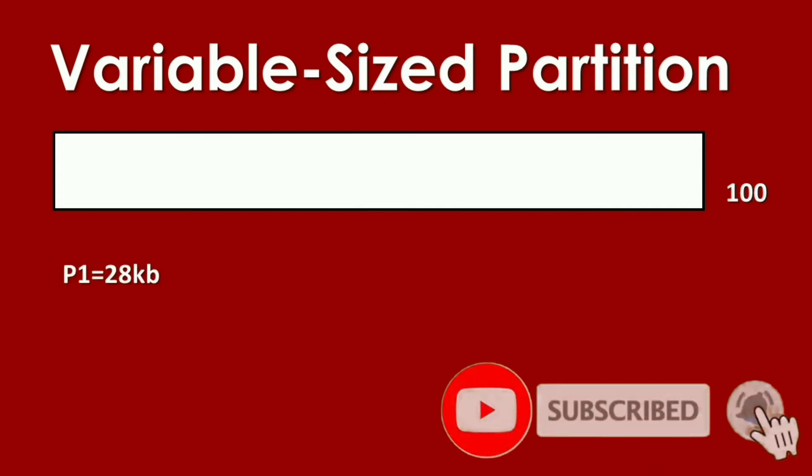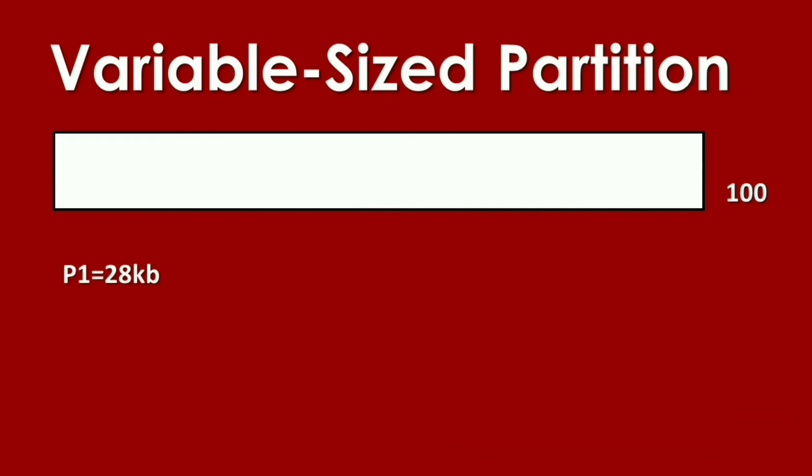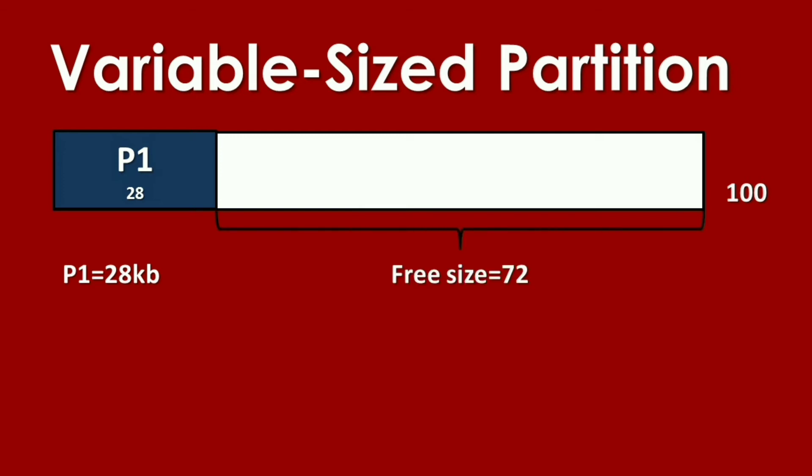We have a process of 28 KB. It will place the process in the memory. Consider the first process. It has 28 KB. It will be subtracted from the total size of memory. So it has a free size of 72 KB. This free size can be allocated to other incoming processes.